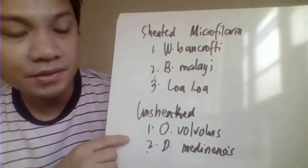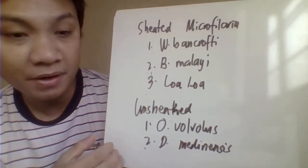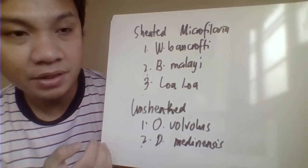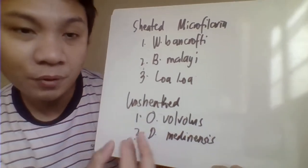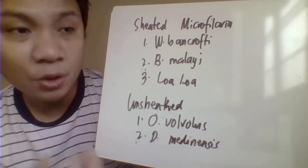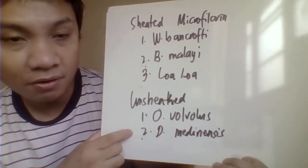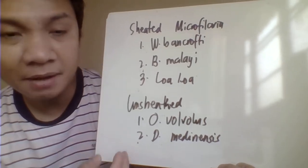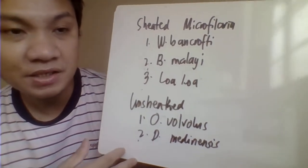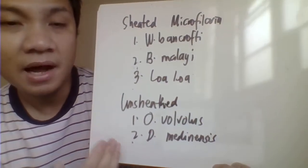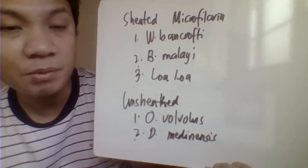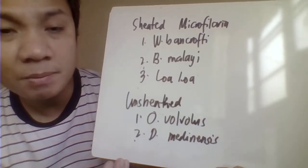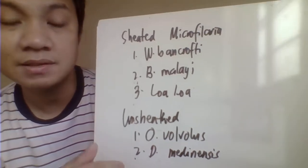For the unsheathed species, we have Onchocerca volvulus, which cannot be found in the peripheral blood. It is found in the tissues — specifically subcutaneous tissues or subcutaneous nodules, which are tumor-like structures encapsulated in nodules or capsules. We also have Dracunculus medinensis, which can be found in the visceral organs and subcutaneous tissues. We'll be discussing each species individually later on.